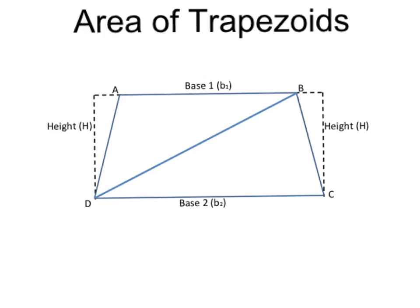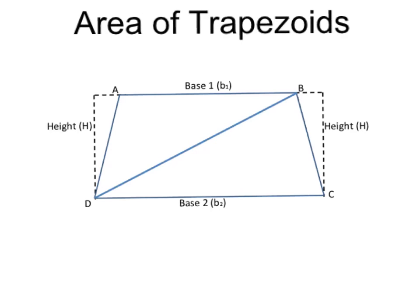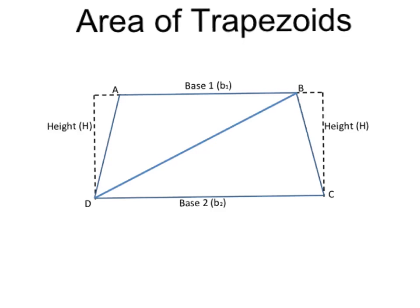So now I want to figure out what the area formula to find the area of a trapezoid is going to be. And I want to use some of the information I already know, and I already know how to find the area of a triangle. So I'm going to split my trapezoid into two triangles.